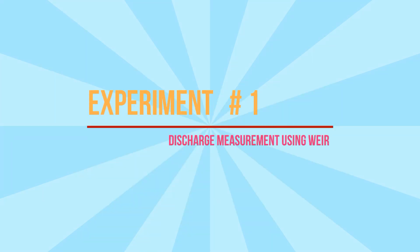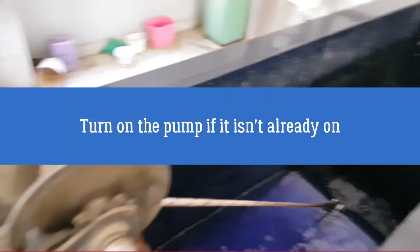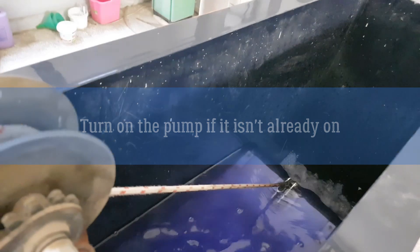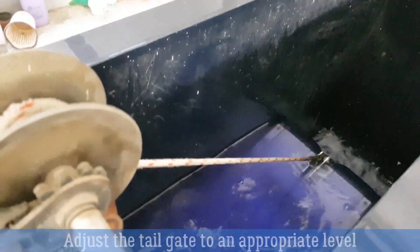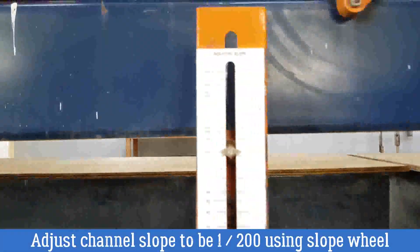Now let's see experiment number one, discharge measurement using weir. Turn on the pump if it's not already on. Then adjust the tailgate to an appropriate level. Adjust the channel slope to be 1 over 200 using the slope wheel.